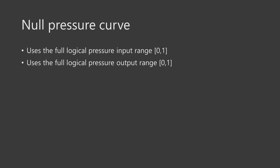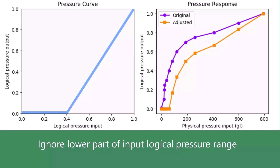One noteworthy feature of the null pressure curve is that it uses the full input logical pressure range and the full output logical pressure range. Some other pressure curves don't have those features. For example, here is a curve that ignores the lower end of the input logical pressure range — indicated by the flat region on the lower left. All input logical pressure in that region is just being ignored. There is a corresponding flat region on the pressure response, but its width is much less wide due to the shape of the original pressure response. This is one of the many cases where the pressure curve does not affect the pressure response in the way you might expect.